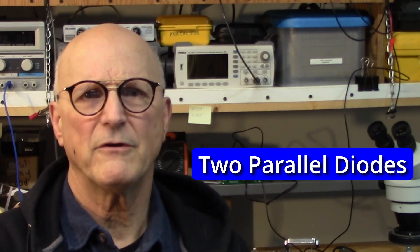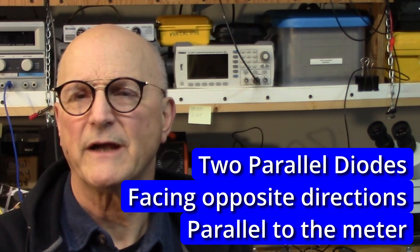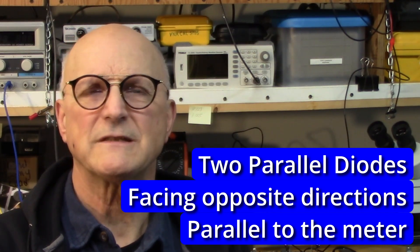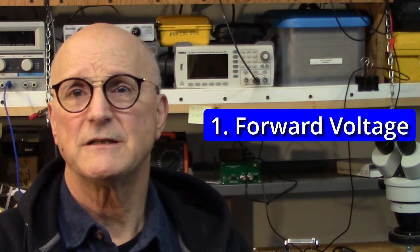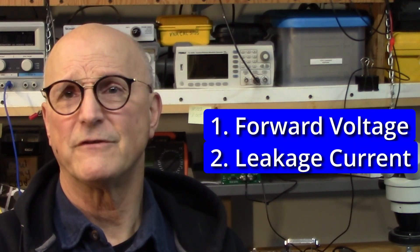In the past, one of the traditional methods of meter protection consisted of a pair of diodes in parallel, each facing the opposite direction placed directly across the meter movement itself. There are two aspects of these diodes that affect the effectiveness of this approach. The first is their forward voltage and the second is the reverse leakage current. Let's briefly look at each of these and then assess the effects of them.